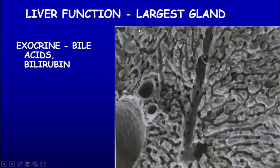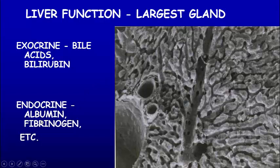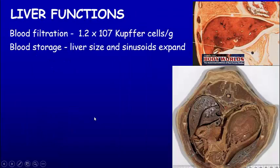The liver is the largest organ. It produces bile and bile salts that go out through the bile duct. The endocrine function includes producing albumin, which is important for keeping water in blood, and fibrinogen as well as other blood clotting proteins. The functions of the liver include filtration of blood — there are a lot of Kupffer cells that line the blood sinuses and are phagocytic, taking things out of the blood.